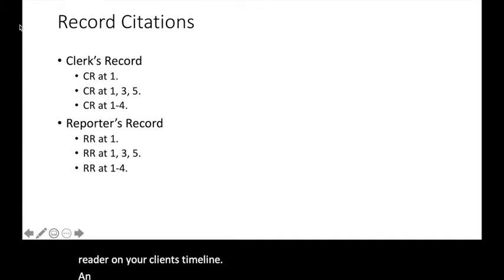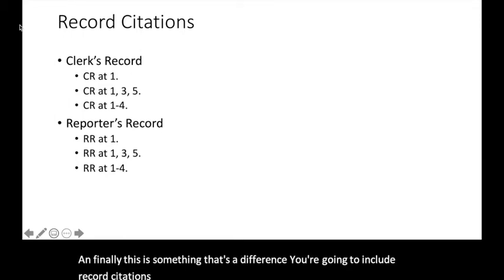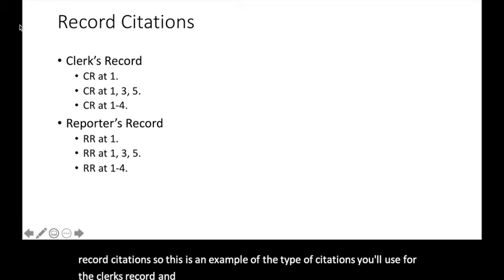And finally, this is something that's a difference. You're going to include record citations. So this is an example of the type of citations you'll use for the clerk's record and the reporter's record. And yes, that's for every sentence of the facts. You want to include record citations.